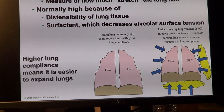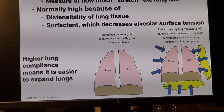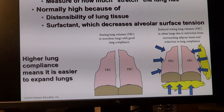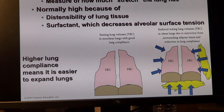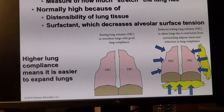Lung compliance is the generation of transpulmonary pressure — pulmonary pressure minus intrapleural pressure. Factors that influence lung compliance include lung elasticity, accumulation of fat around the lungs which can prevent normal expansion, and weakness of inspiratory and expiratory muscles. People with diseases that paralyze or alter respiratory muscles or intercostals can also suffer reduced lung compliance and therefore respiratory problems.